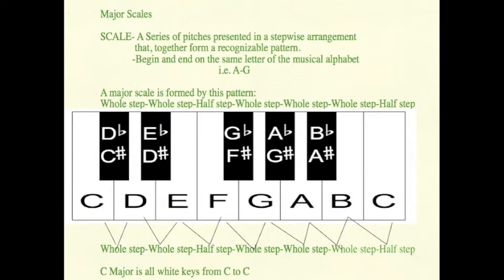The same pattern can be applied to any letter name of the musical alphabet. I'll demonstrate it now on D. So we start on D. We have a whole step to E, a whole step to F sharp, a half step to G, a whole step to A, a whole step to B, a whole step to C sharp, and a half step to D.